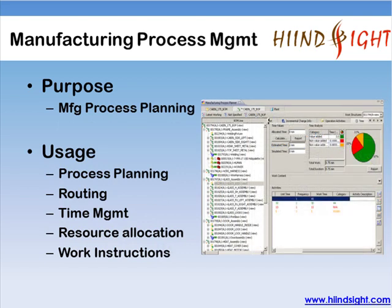Then comes Manufacturing Process Management, the module used to create process plans by manufacturing planners. Once the engineering department releases the BOM for production, the manufacturing department comes into picture to create manufacturing bill of materials, plant structures, tools, and resources. Using this data, manufacturing planners create process plans consisting of sequences of operations, activities, time management, and at last, generating work instructions for the shop floor team.